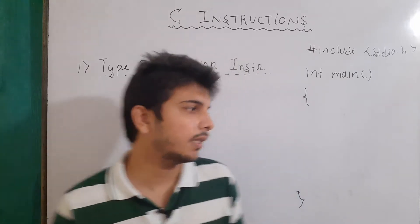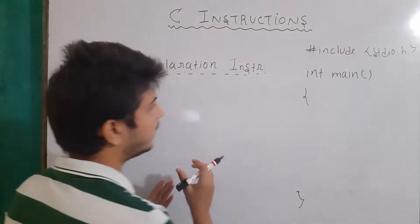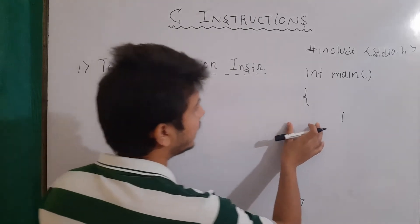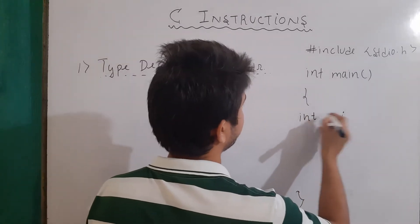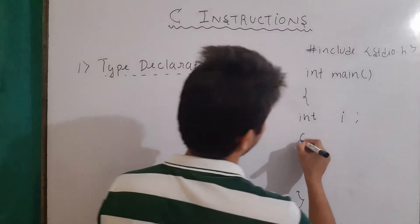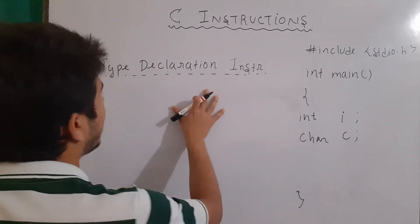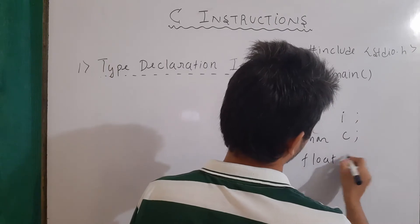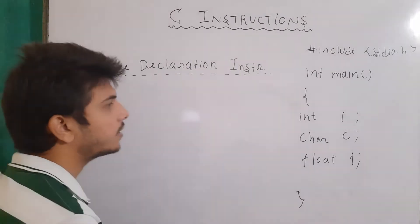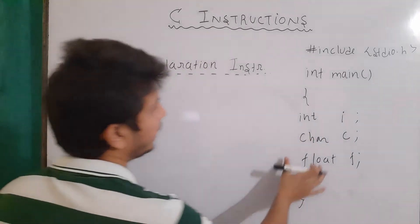First, let's talk about type declaration instructions. These are the instructions used when we are making a variable. Basically, any variable must have some data type. For example, if I want to use a variable named 'i', I have to write its data type — for example, int. So the int keyword is an example of a type declaration instruction. Similarly, we can write char, and the char keyword is also a kind of type declaration instruction. The same applies for float.